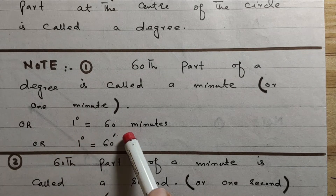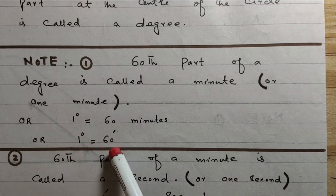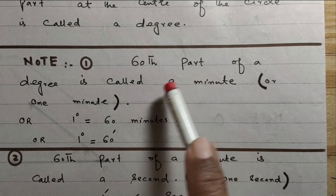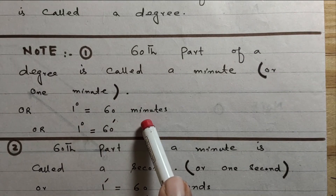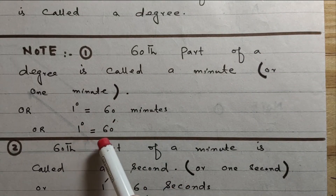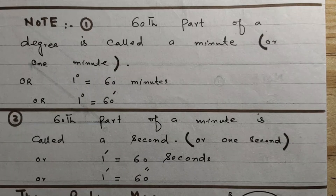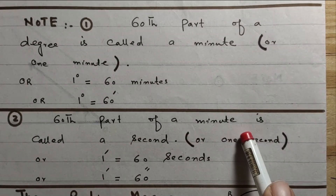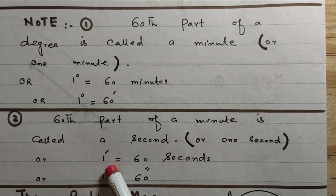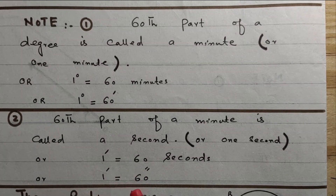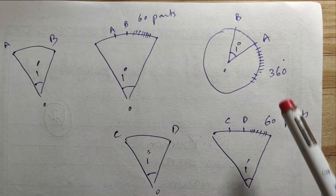One degree is equal to 60 minutes — the 60th part of a degree is called a minute. One minute is equal to 60 seconds — the 60th part of a minute is called a second. Seconds are represented by a double prime symbol.